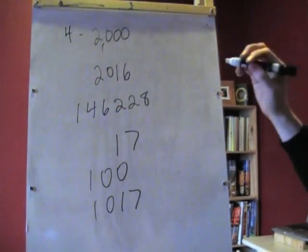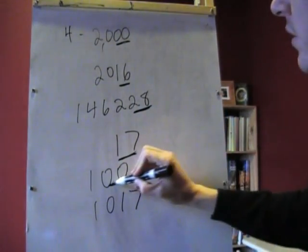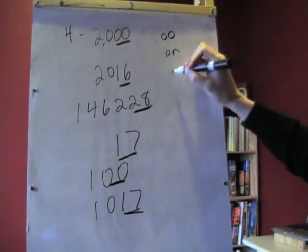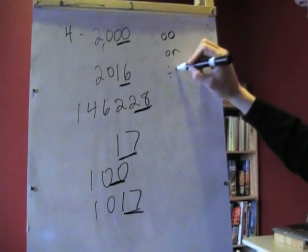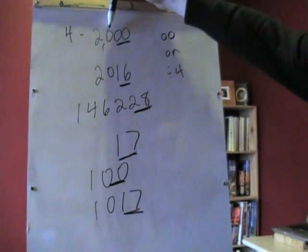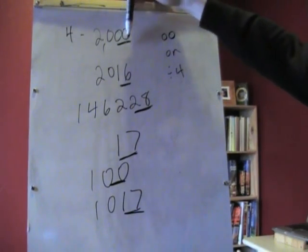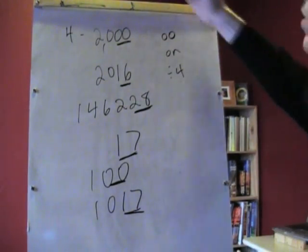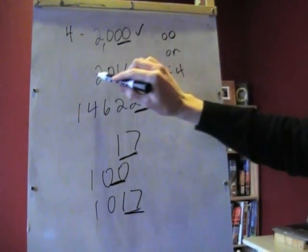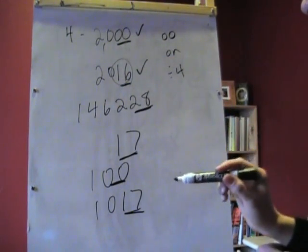The trick with 4 is that you look at the last two numbers. Anything else does not matter. You only look at the last two numbers. If the last two numbers are 00 or divisible by 4, then the whole number is divisible by 4. And that makes sense because if there's anything here, that's a 100. And we know that 100 is divisible by 4. So all we really care about is the numbers that are smaller than that. So let's go ahead and look at this one. Is this a 00? Yes. So that is, 2000 is divisible by 4. 2016 is also divisible by 4 because 16 is a multiple of 4.